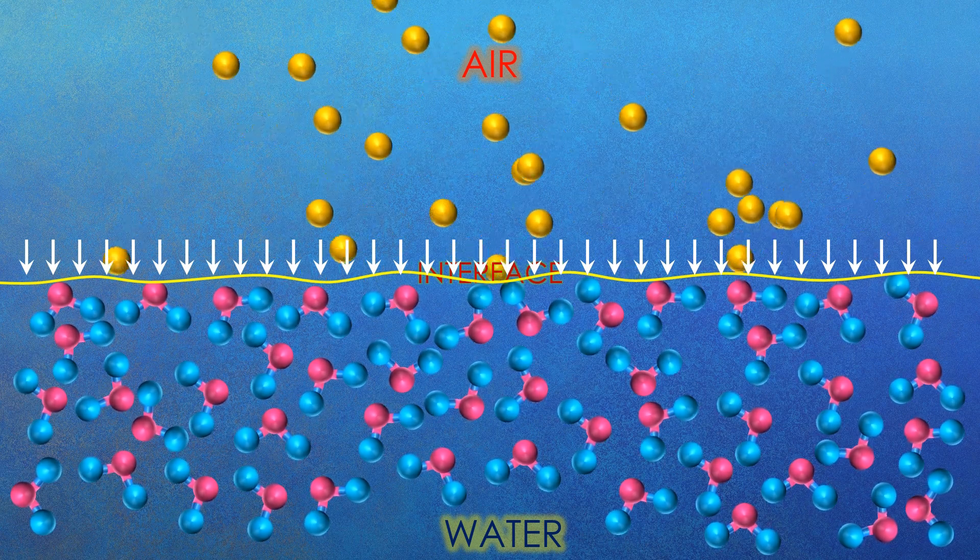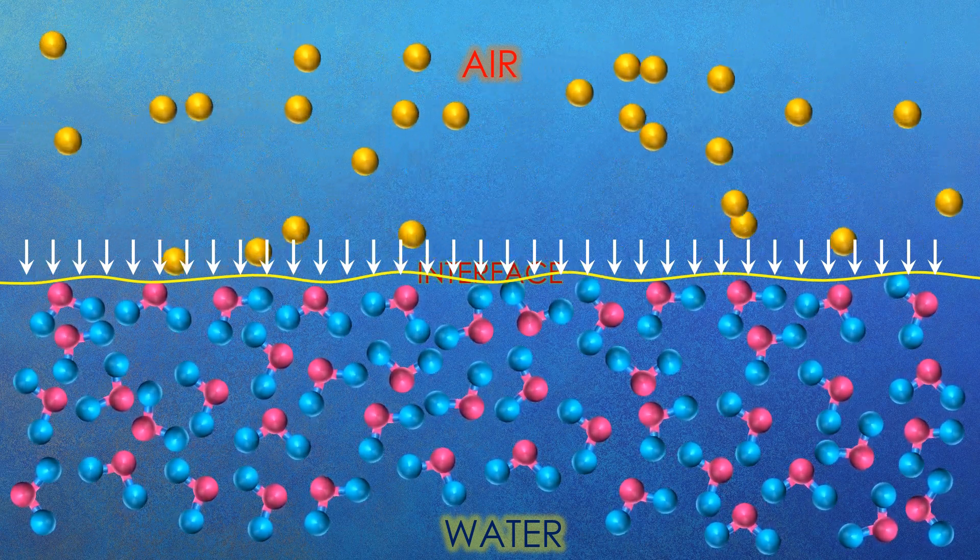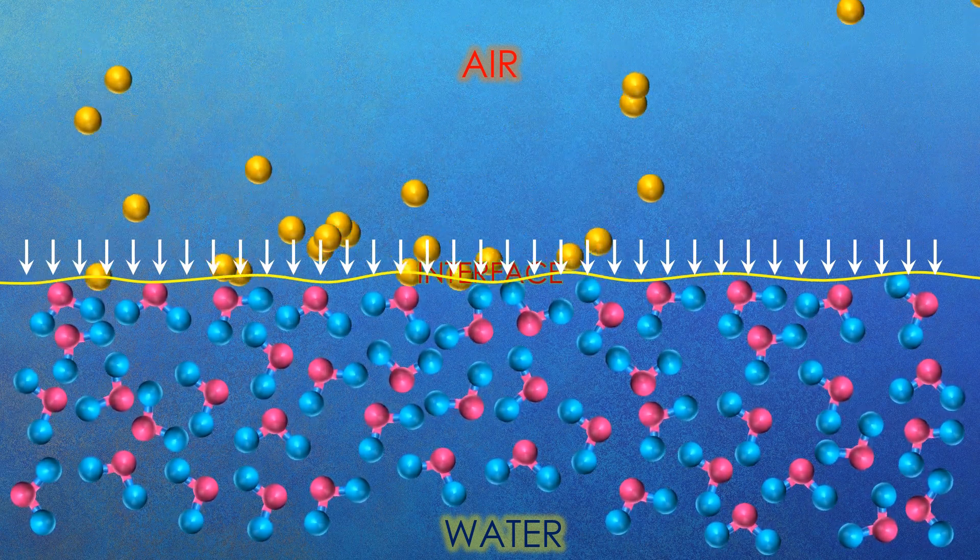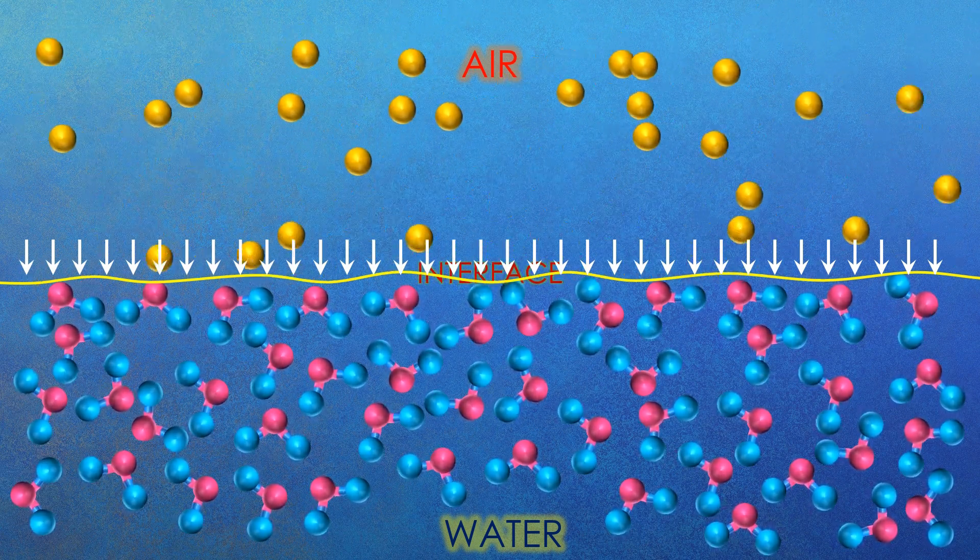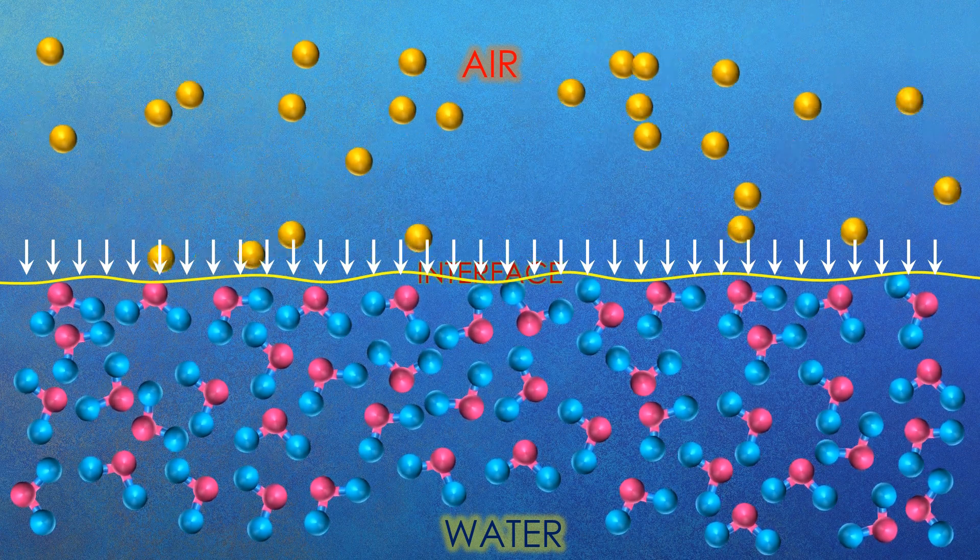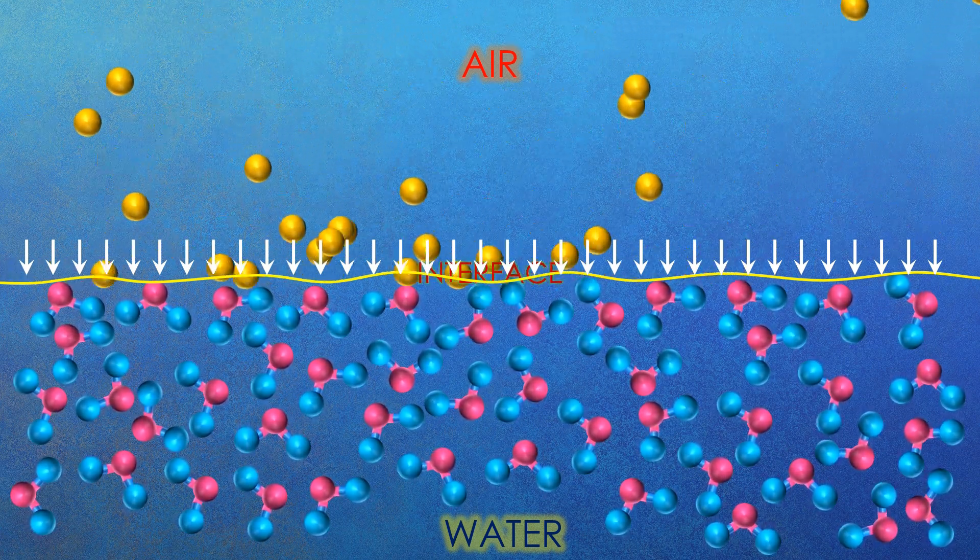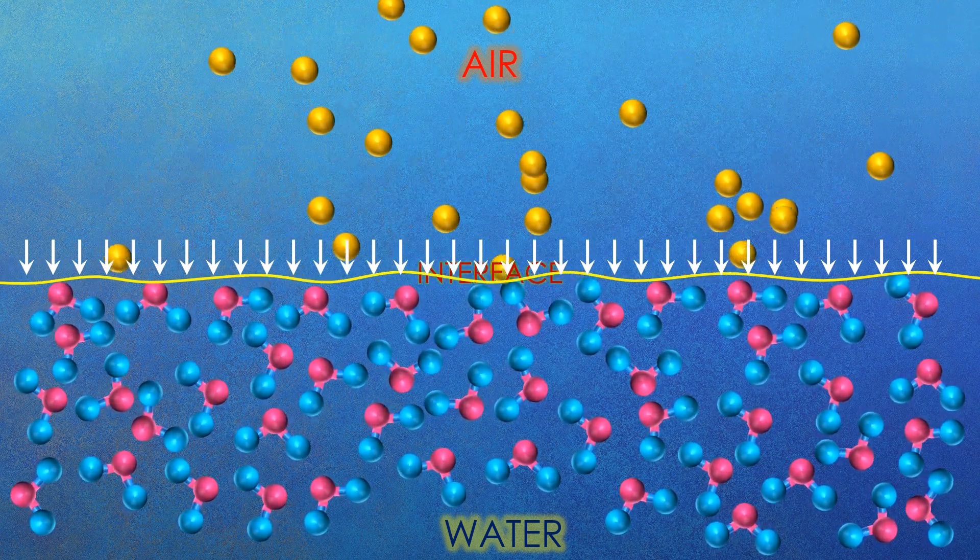This atmospheric pressure is basically compressing the water molecules and not allowing them to move away from each other and create a bubble. So water molecules will require more energy or heat and time to boil at atmospheric pressure inside your house.